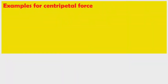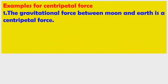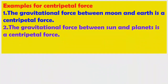Now we will see examples for centripetal force. The first one is the gravitational force between the moon and earth, which acts as a centripetal force. This gravitational force allows the moon to revolve around the earth. Similarly, the gravitational force between the sun and planets acts as a centripetal force, so the planets can revolve around the sun.